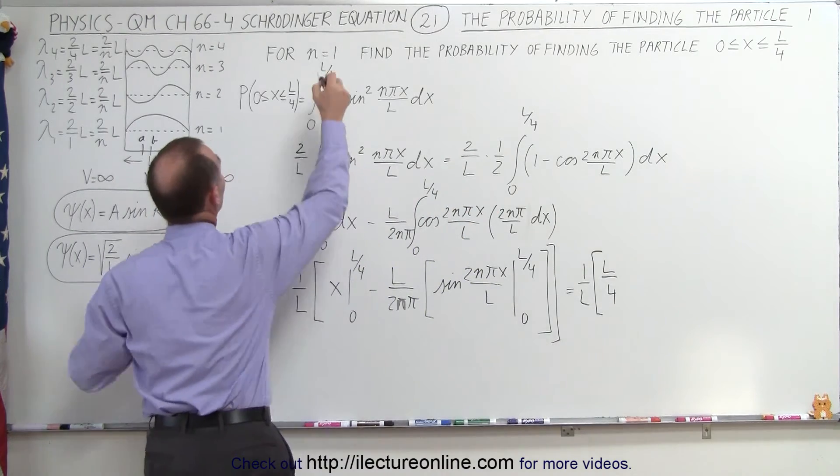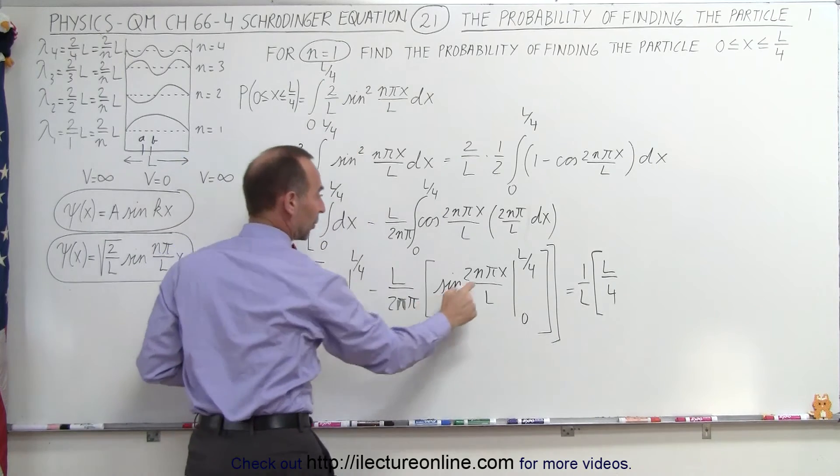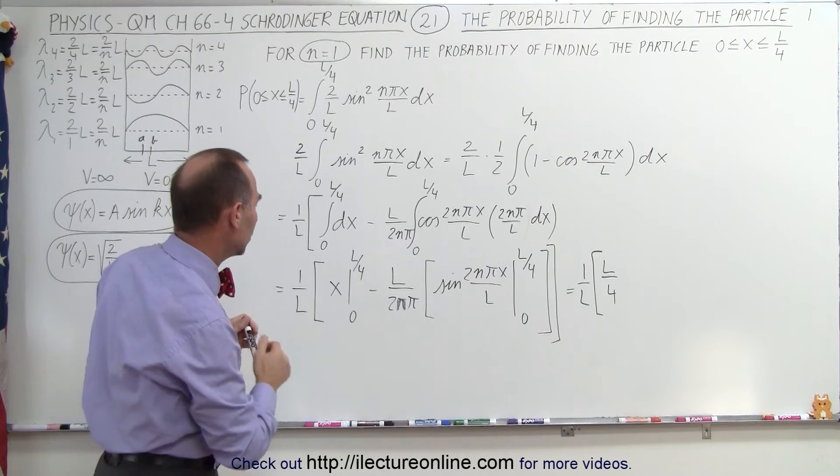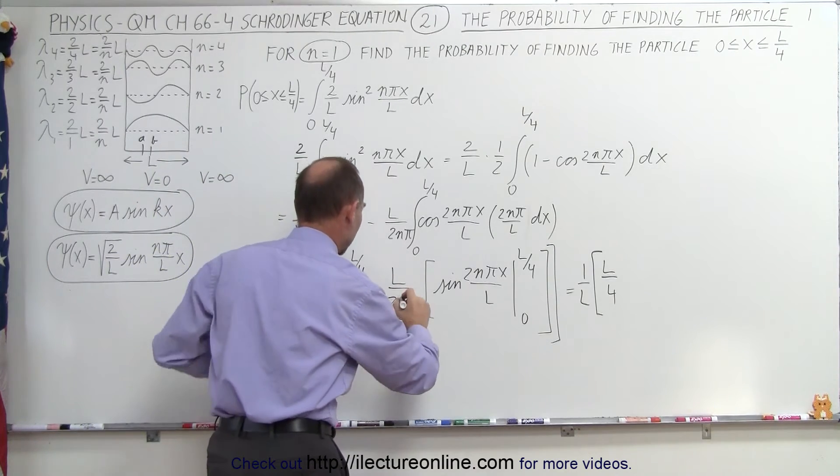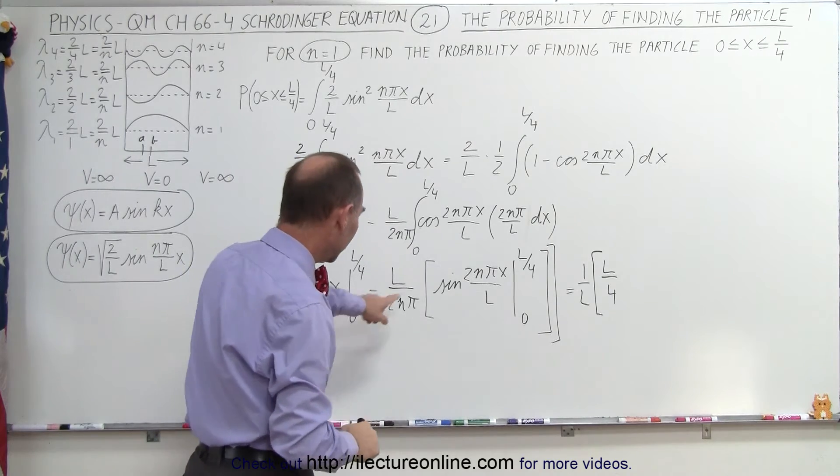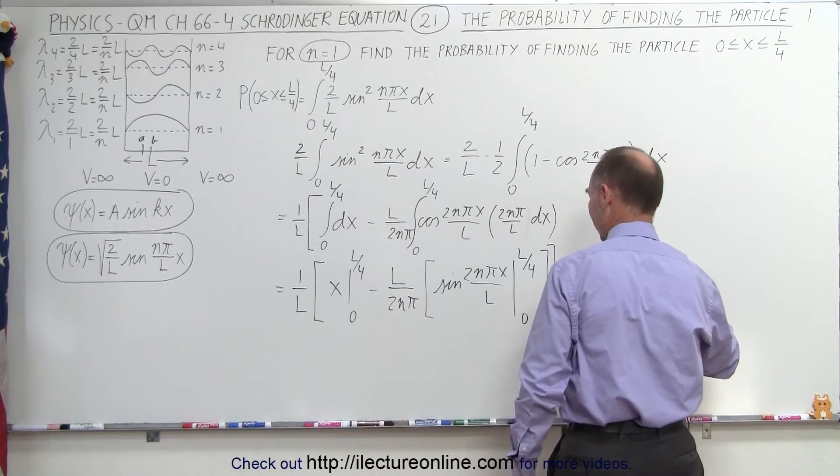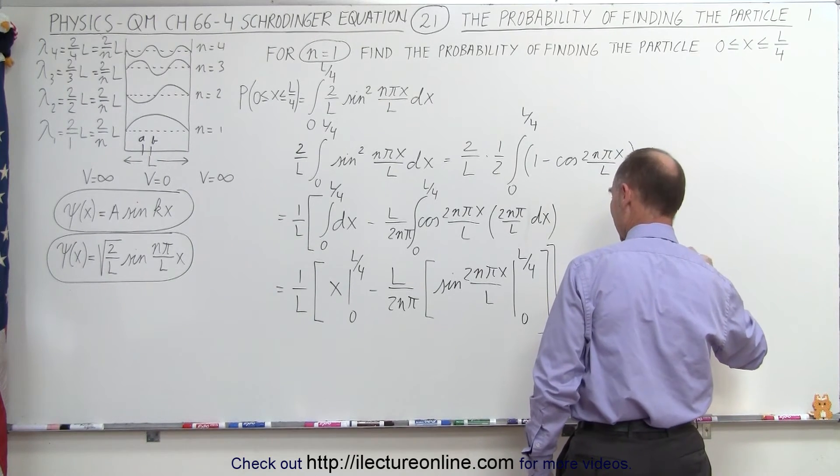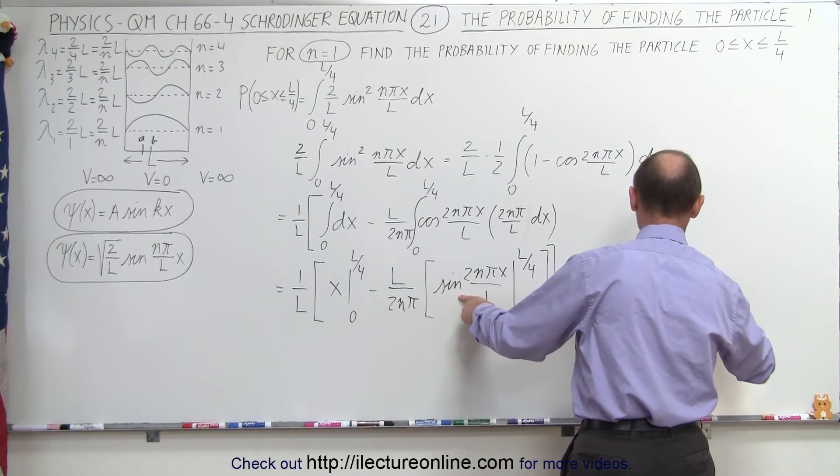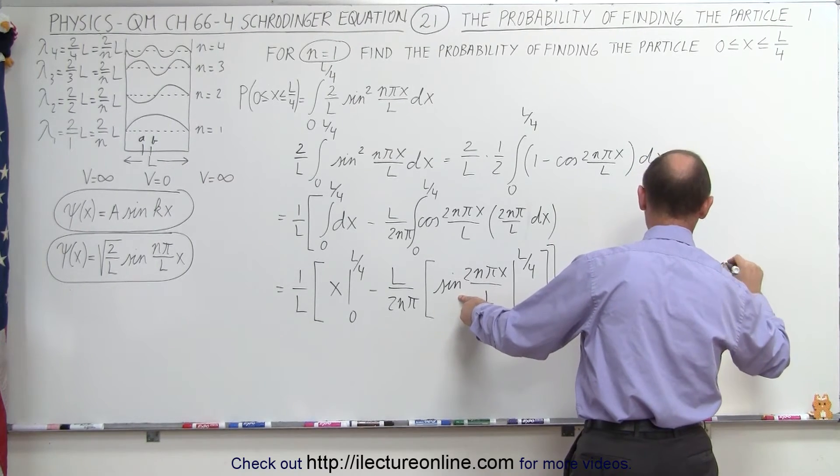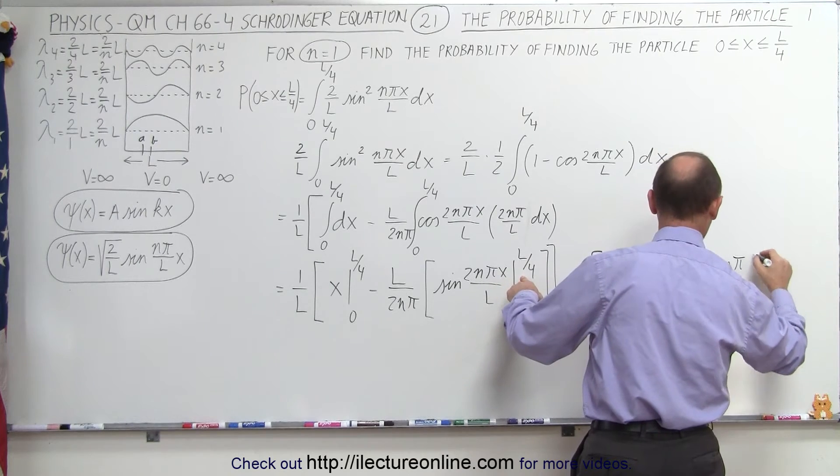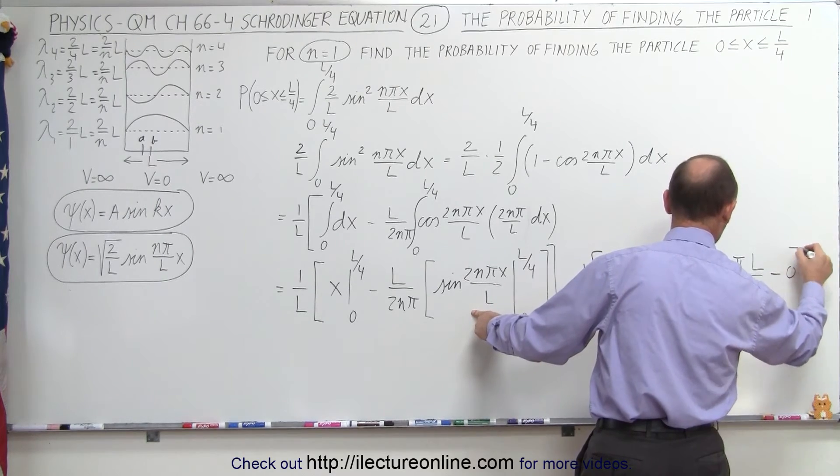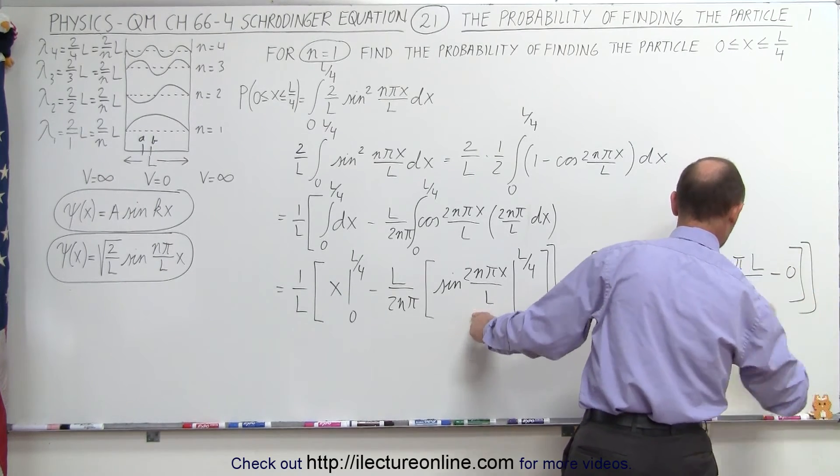And of course, remember that we let N equals 1, so over here we're going to have to put a 1 in for N. Making all kinds of mistakes here, this should also be an N. There we go, better. Now let's plug in the limits here. So we get minus L divided by 2N pi times, plug in the upper limit, we get the sine of 2N pi. Instead of X, we're going to write L over 4, and of course we still have the L there. Plug in the lower limit, we get 0. So there you go. Now we're almost there.